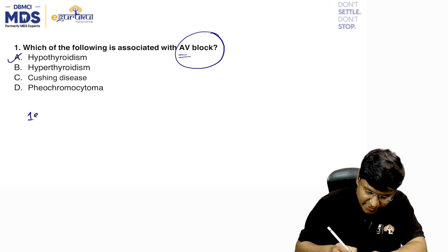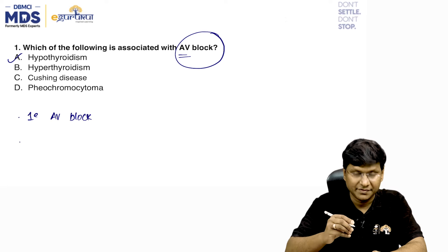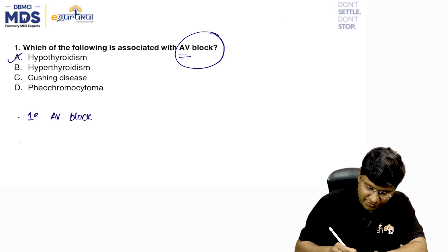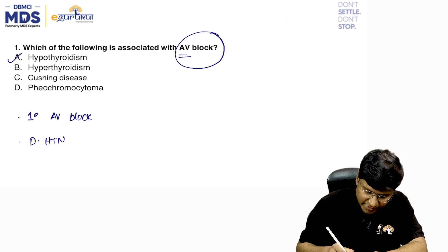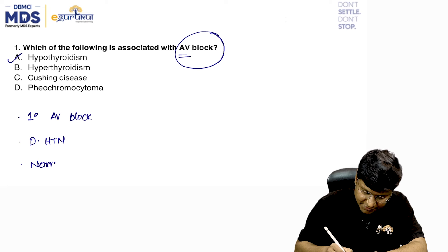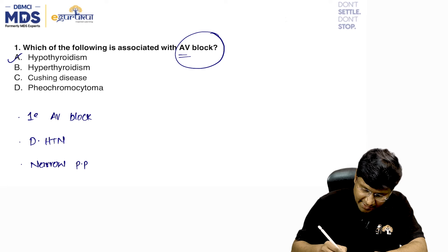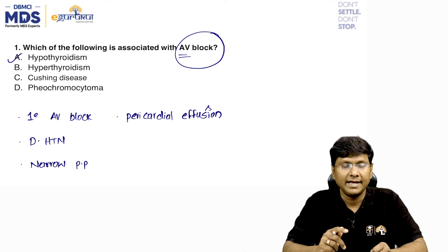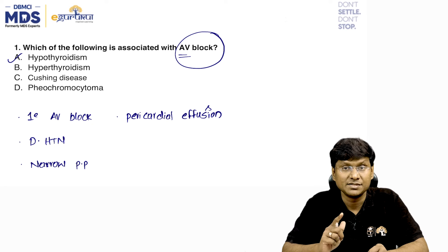You also need to know the various cardiovascular system manifestations of hypothyroidism. In hypothyroidism there can be development of diastolic hypertension, narrow pulse pressure, and another important manifestation is development of pericardial effusion. These are the cardiovascular system manifestations in patients with hypothyroidism.